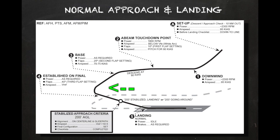Before turning onto final, the pilot should check that the approach area is clear of any traffic — it is not uncommon for other aircraft to be flying straight-in approaches. Once turned onto the final approach segment and within gliding distance of the airport, flaps can be extended to 40 degrees if desired. The aircraft should then be slowed to the proper approach speed known as V-Ref, and the heading adjusted for wind so the aircraft's track remains aligned with the runway centerline throughout the final approach.